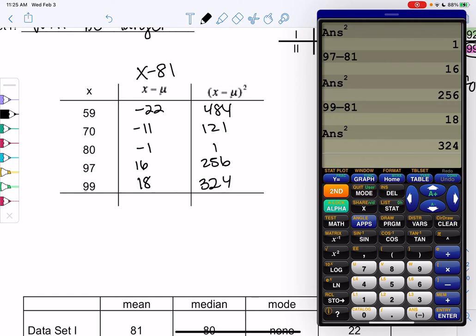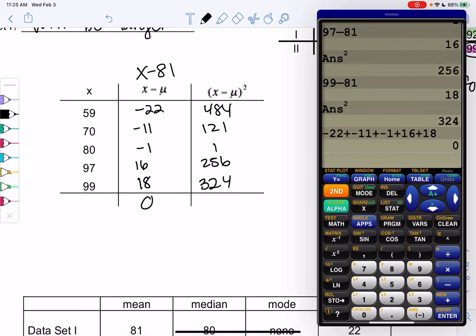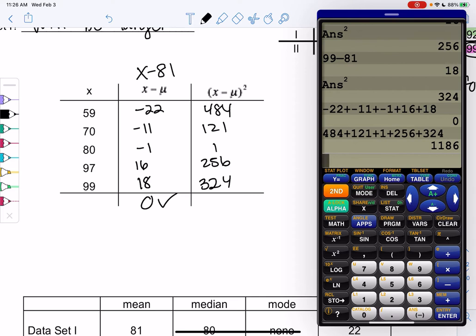And then we'll go ahead and find the totals. I like to find the total of the middle column really just to check my work. So the middle column, remember, should always be 0. So it's really just to check. Yep, we got 0. And then go ahead and add the column on the right, the very last column. And then we're almost done at that step. So we have 484 plus 121 plus 1 plus 256 plus 324, and we get 1186.